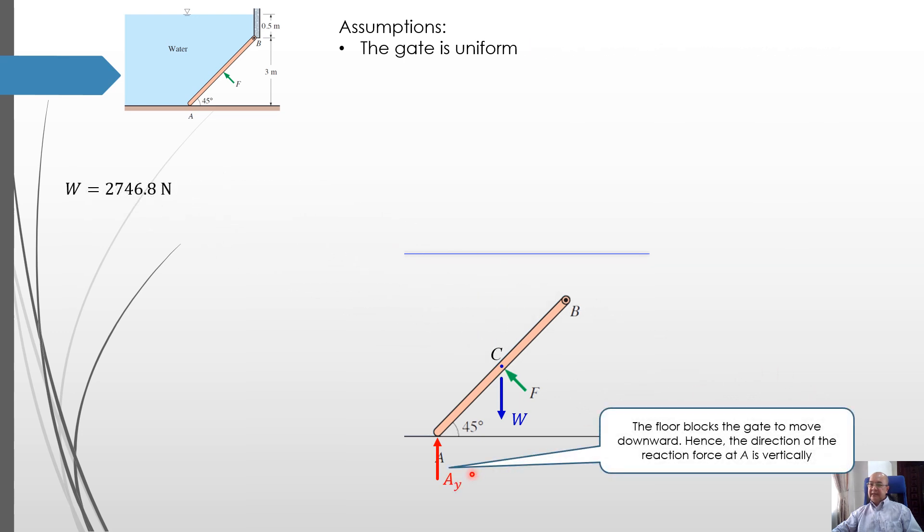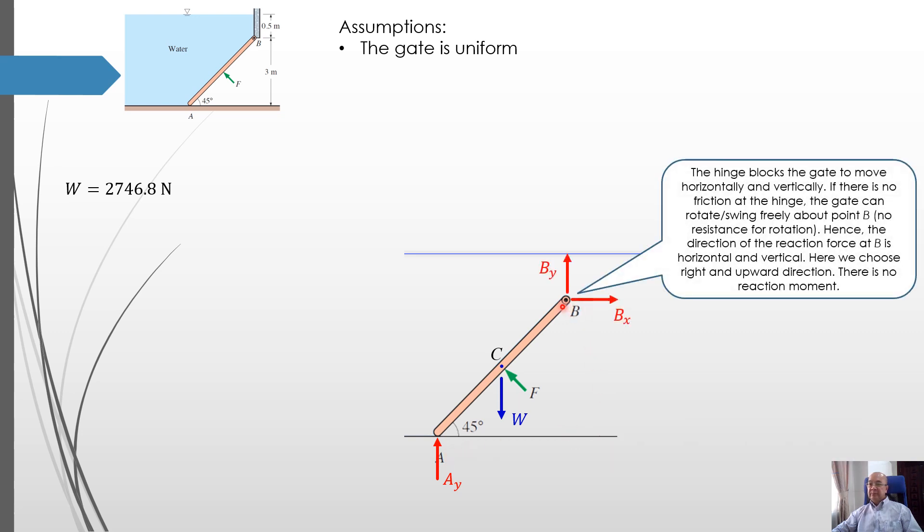Now let's see the reaction force at A. The floor blocks the gate to move downward. In that case, the reaction force at A will be vertically upward. At B, the hinge blocks the gate to move either horizontally or vertically. So the reaction force will be in horizontal and vertical direction. Here we choose right and upward. If there is no friction at B, the gate can swing freely about point B. So there is no reaction moment at B.